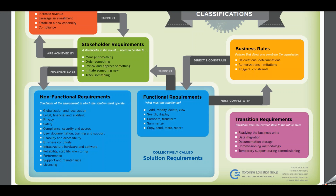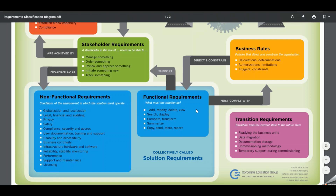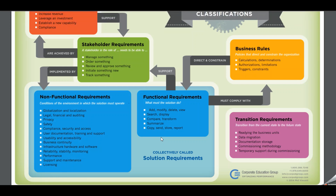Functional requirements are the expected features of a system or product — things like registering a new user, making a bid online, using vendor self-service, or printing various types of reports. Functional requirements essentially answer the question: what must the solution do? Any specific feature or enhancement you're looking for must be captured here.